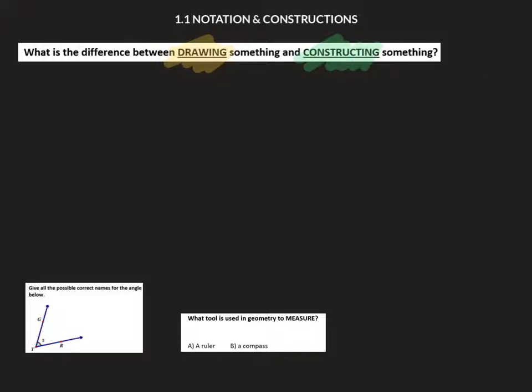Drawing refers to a much more informal process. If I wanted to draw the midpoint, I would place it there and then maybe distinguish that there are two sides equal to each other. Let's call this AMB. This is drawing a midpoint.